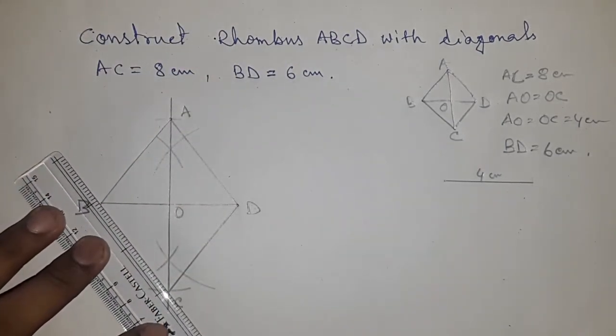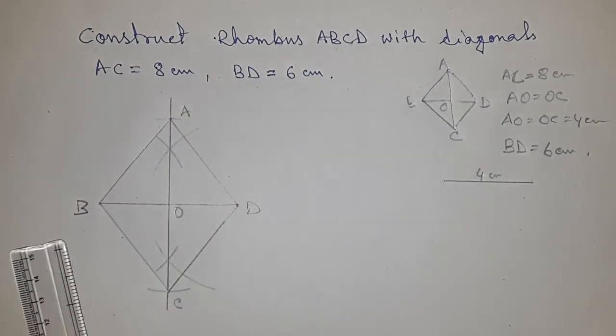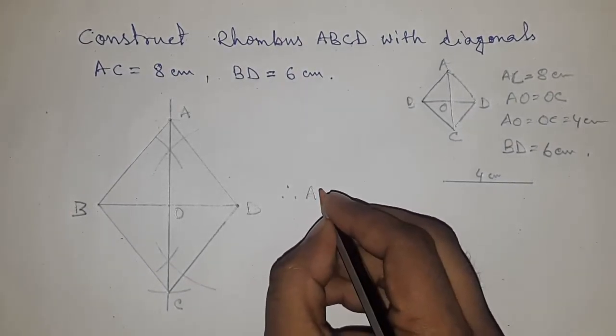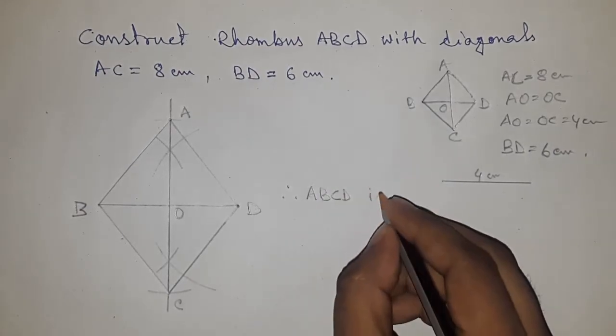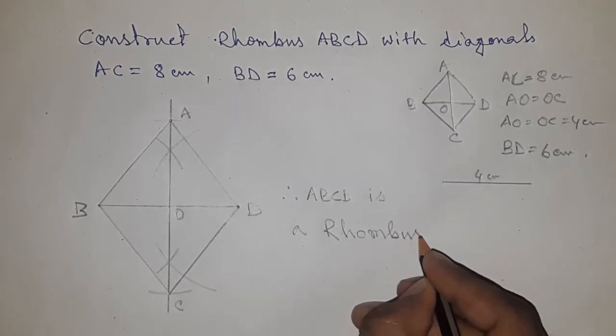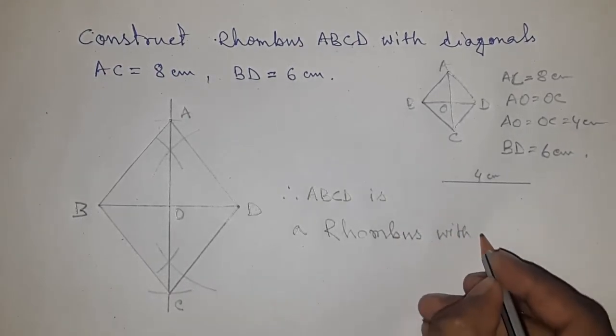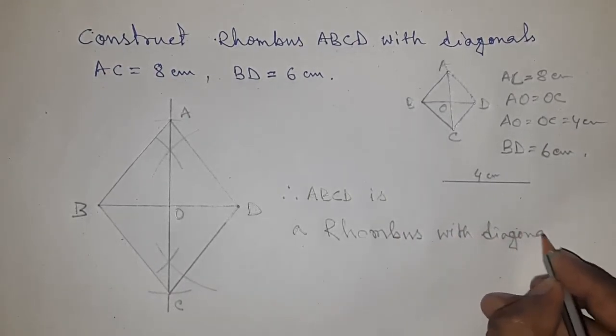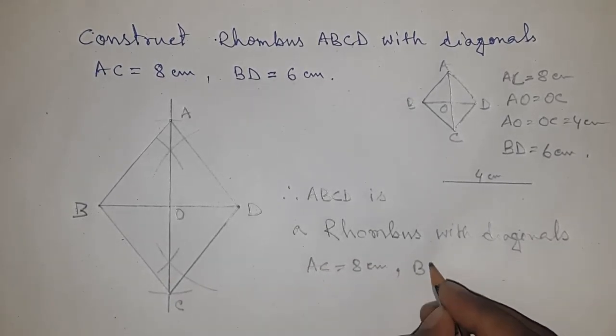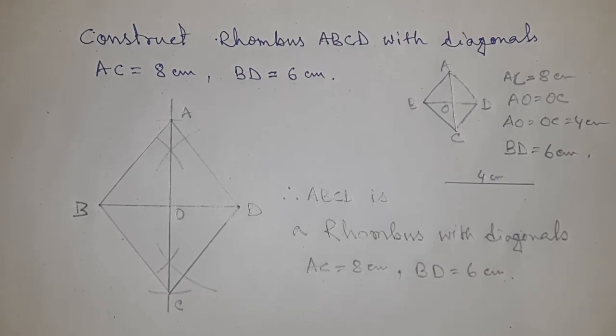Therefore ABCD is a rhombus with diagonal AC equal to 8 centimeter and diagonal BD equal to 6 centimeter. Thanks for watching. If this video is helpful, then please subscribe channel and press the bell icon for future video notification and like the video. Please comment on my video if there is any mistake. Thanks.